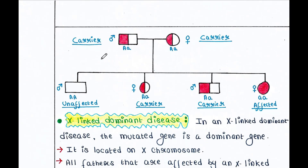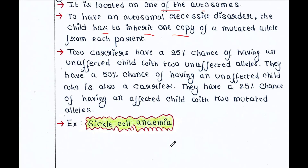In this pedigree we have a carrier male and a carrier female — both are carriers, meaning both have one copy of the mutated allele, small a. Since this is a recessive mutation, one needs to get both recessive mutant alleles to be affected. The result: one unaffected child, two carrier children, and one affected child who unfortunately received both mutated alleles from their parents. This type of mutation occurs in sickle cell anemia.